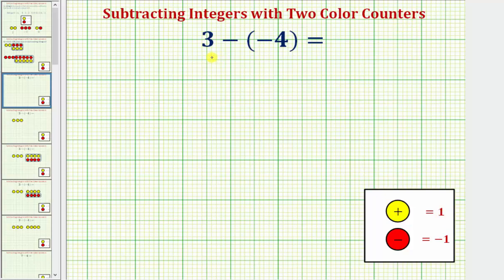We'll consider the problem three minus negative four. We're going to begin by modeling positive three. To do this, we would use three yellow counters. So here's positive three.